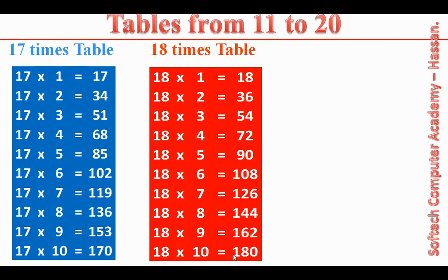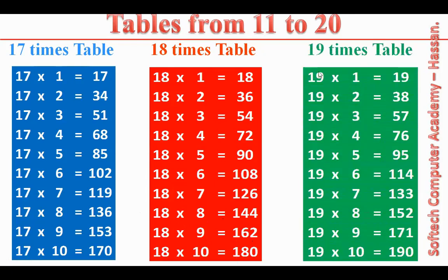18 tens are 180. 19 times table. 19 ones are 19. 19 twos are 38. 19 threes are 57. 19 fours are 76. 19 fives are 95. 19 sixes are 114. 19 sevens are 133. 19 eights are 152. 19 nines are 171. 19 tens are 190.